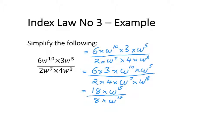My next step is to simplify my numbers. I can't divide 18 by 8 directly, so I look for a common factor in both 18 and 8, which is 2. So 18 divided by 2 equals 9 and 8 divided by 2 equals 4. That becomes 9 times w to the power of 15 divided by 4 times w to the power of 15.